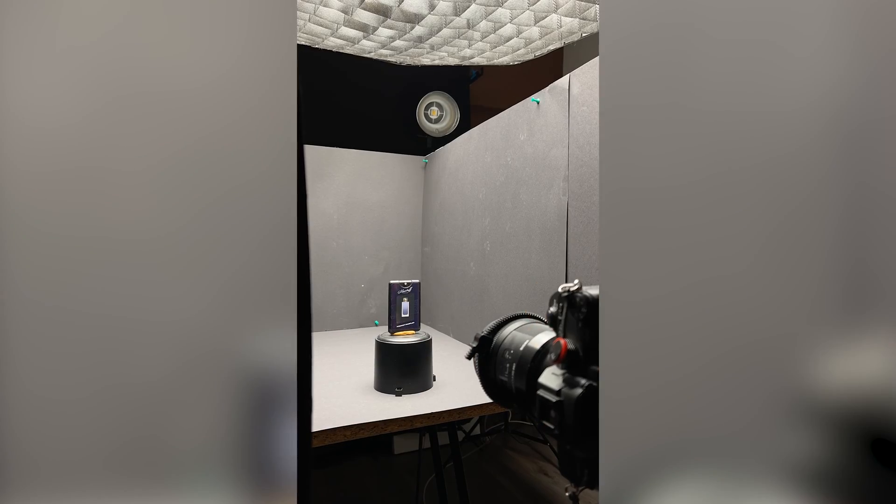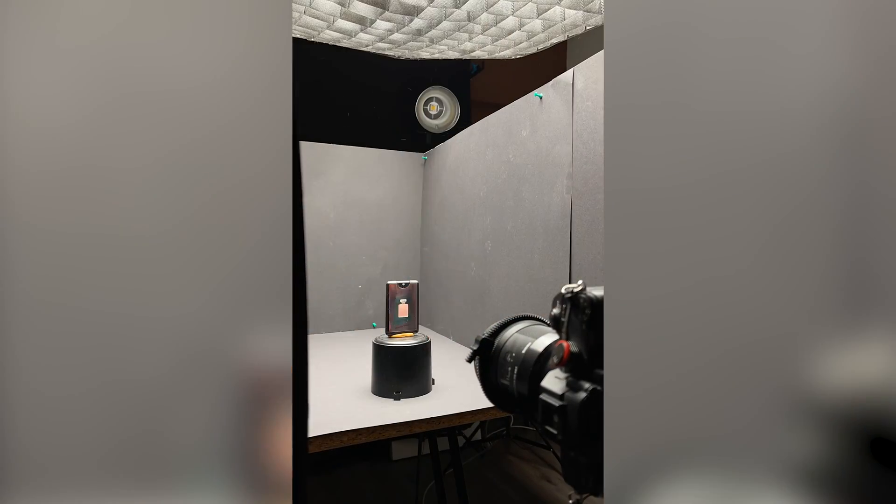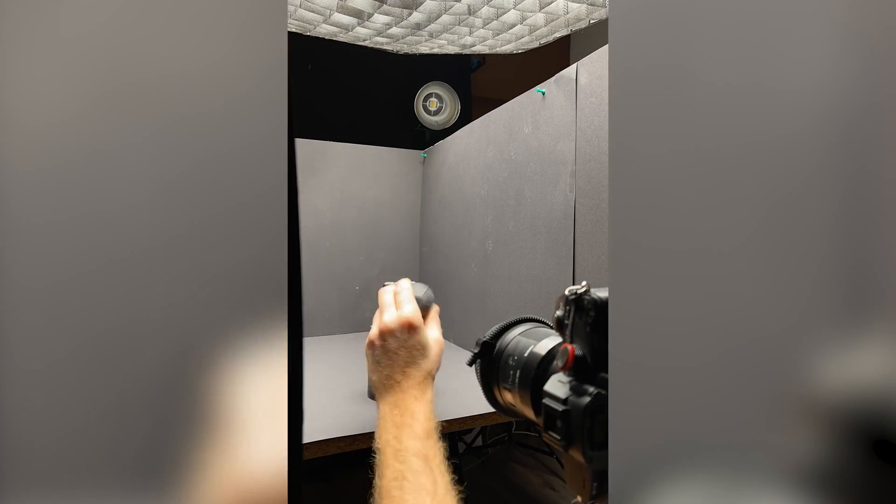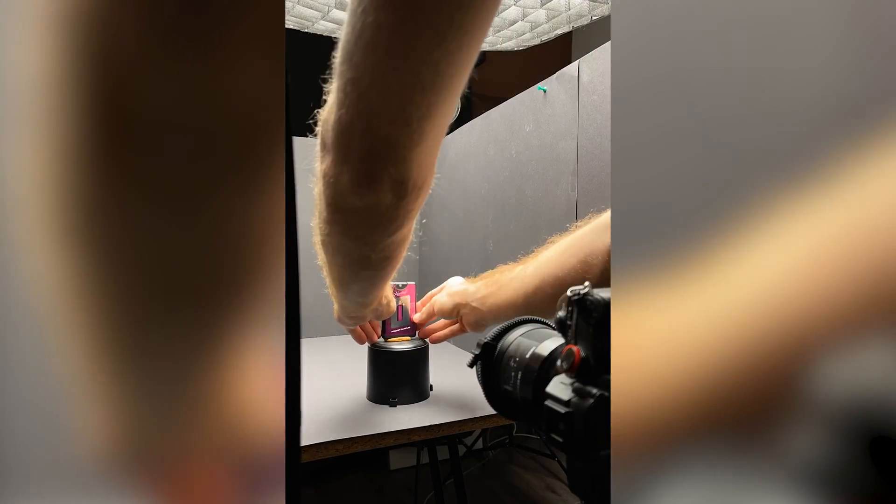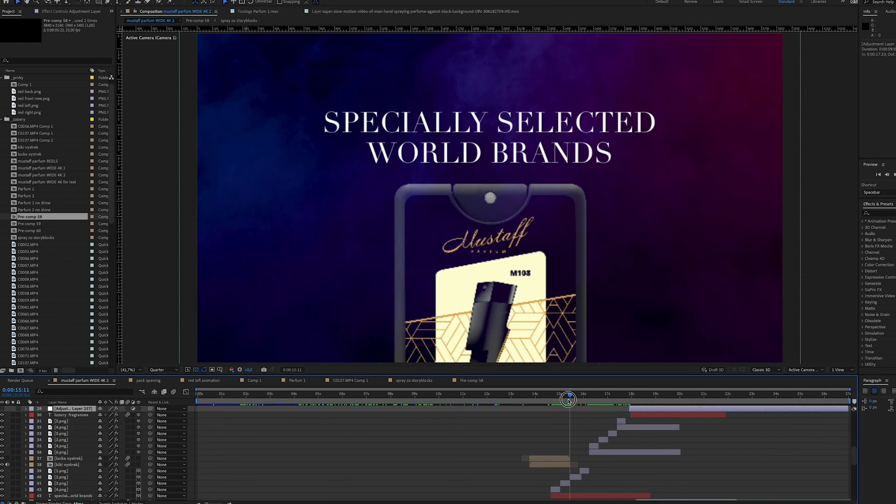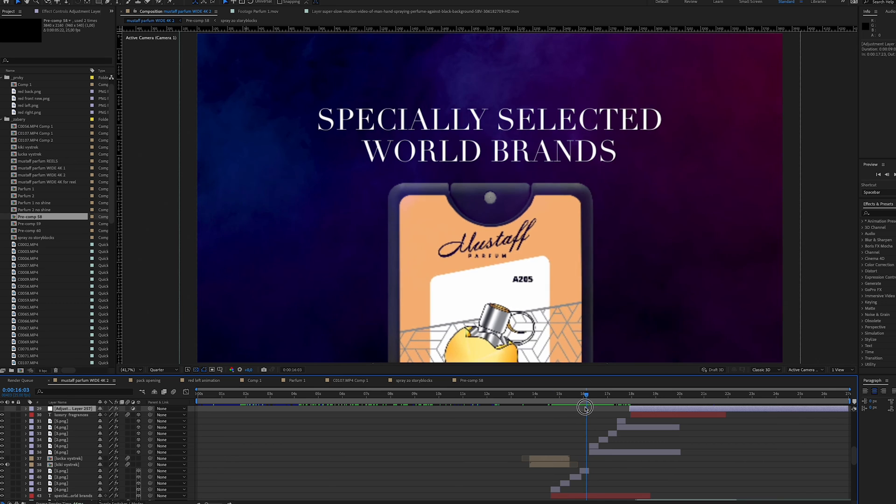In the next shot I wanted to show the multiple variation of the perfumes so basically I took a few pictures of different perfumes. Then I bring all the pictures to Photoshop, remove the background and save all the images as a PNG file. Import all the images to After Effects, place them to the scene and make a simple cut between them.